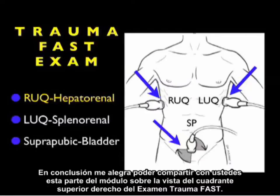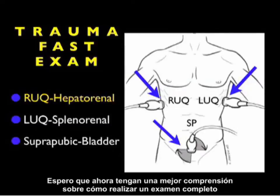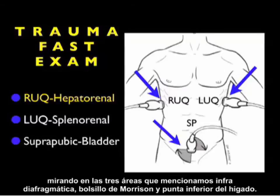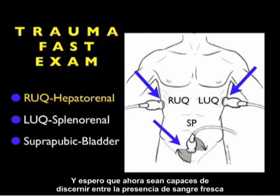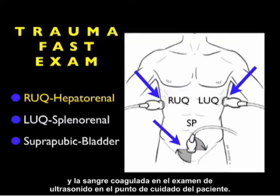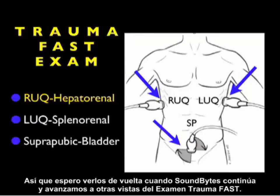In conclusion, I'm glad I could share this part two module on the right upper quadrant view of the trauma FAST exam. I hope you now have a better understanding of how to perform a complete exam looking at the three areas we discussed: infradiaphragmatic, Morrison's pouch, and inferior tip of the liver. Hopefully you'll now be able to discern the presence of fresh blood versus clotted blood on bedside sonography. I hope to see you back as Soundbite Cases continues and we move through the other views of the trauma FAST exam.